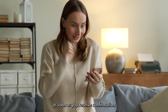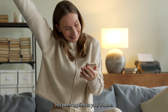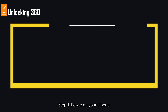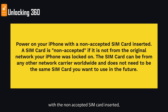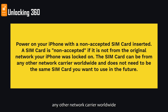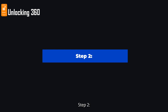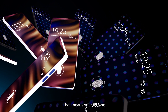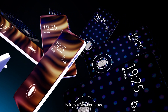As soon as you receive confirmation that the unlock has been applied to your iPhone, please follow these steps. Step 1: Power on your iPhone with a non-accepted SIM card inserted. A SIM card is non-accepted if it is not from the original network your iPhone was locked on. The SIM card can be from any other network carrier worldwide and does not need to be the SIM card you want to use in the future. Step 2: Your iPhone will automatically activate with your new SIM card, meaning your iPhone is fully unlocked.